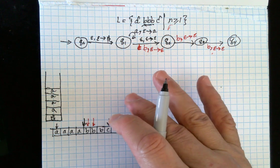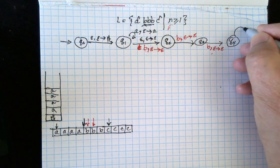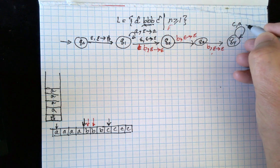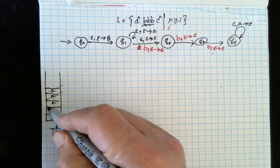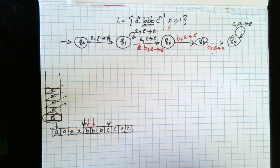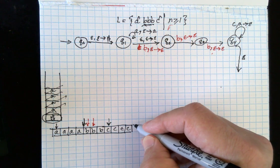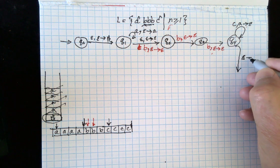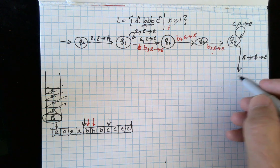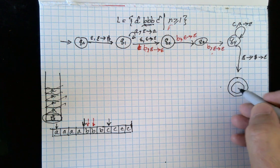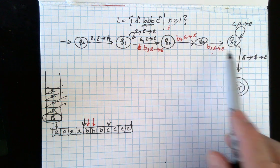Now we start reading the C's — for every C we read, we pop an A from the stack and push nothing. So we read the first, second, third, and fourth C, popping an A each time. When we reach the dollar sign marker, we read nothing from the tape, pop the dollar sign, and push nothing. Now we are at final state Q5.